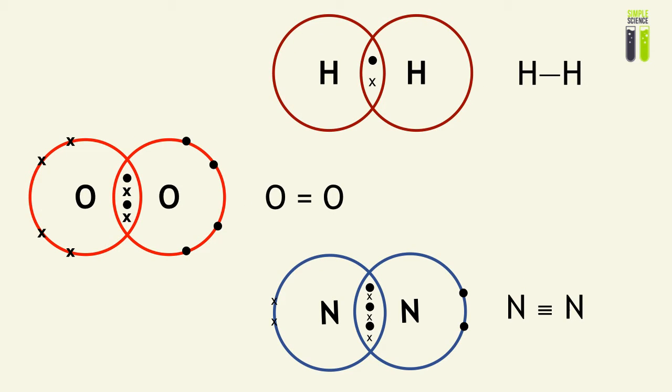We also talked about the notation we can use to describe a covalent bond in our exams — a single dash, a double dash, and a triple dash representing how many electron bonds there are in our compound.